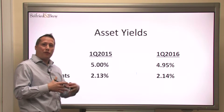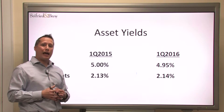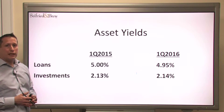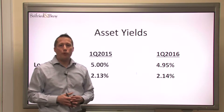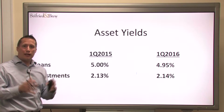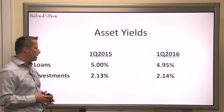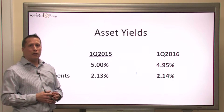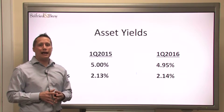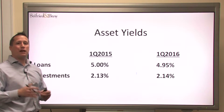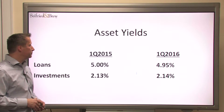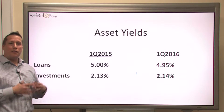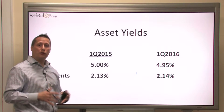We can see that occurring within our balance sheet. Loans in the first quarter of 2015 were at 5.00% on average, and now they're down to 4.95%, just like we saw with the U.S. Treasury market. The investment portfolio increased just slightly from 2.13 to 2.14. Keep in mind these investment portfolio yields are not tax-effected — these are straight yields without the benefit of tax-free municipals. So the asset yields haven't really generated much more yield for our overall yield on earning assets.